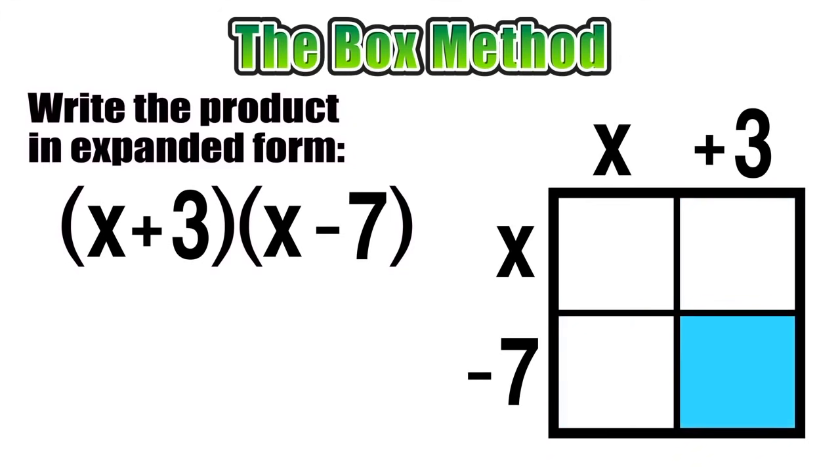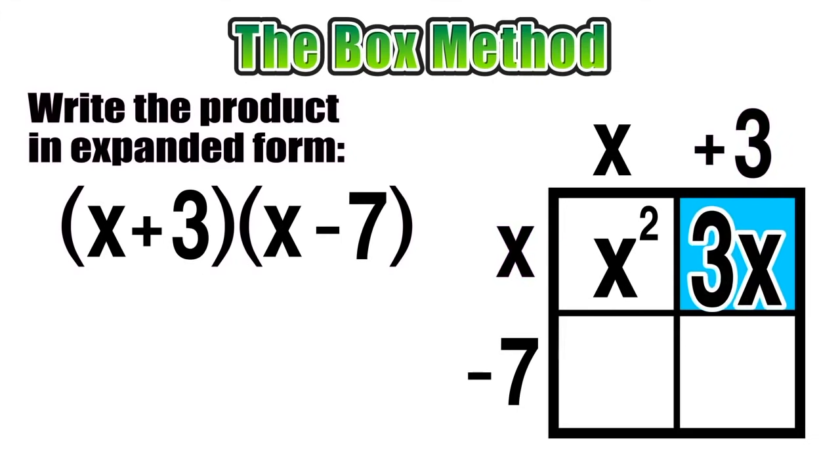If we start with the top left section of our box, that is the product of x and x, which we know is just x squared. Now we can move on to the top right section, which is the product of x and positive 3, which we know is just 3x.